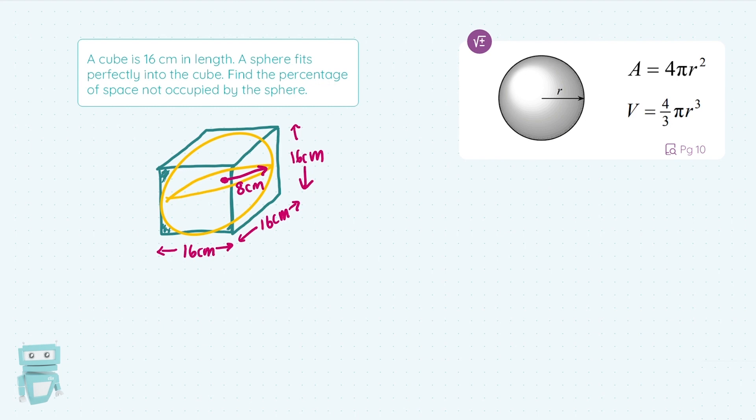So it's like a three-step process here. We're going to work out the volume of the cube, work out the volume of the sphere, and then subtract the answers. So the first thing, work out the volume of the cube.